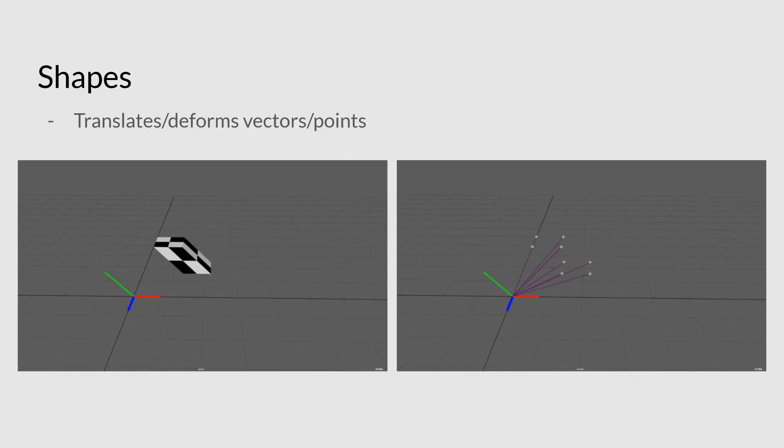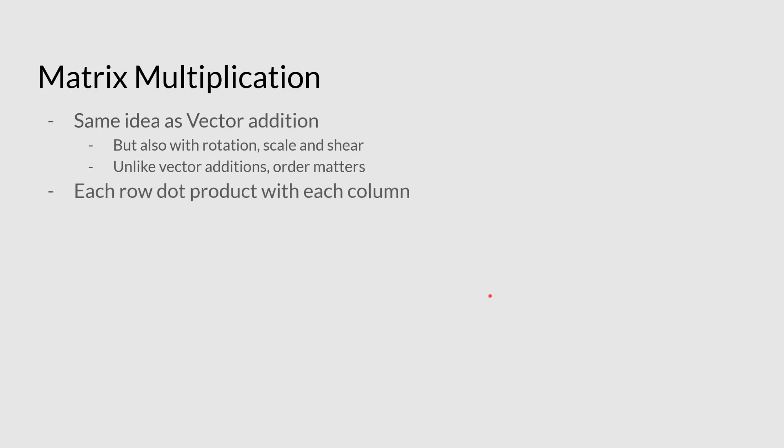So to do all of the main workhorse of the matrix math is matrix multiplication. It's sort of the same idea as vector addition, but you will also get rotation, scale, and shear because those are components of or functions in the matrix. So unlike with vector addition, you have to be certain of the order. The order will drastically change how your final result will look like. To actually do matrix multiplication, you have to take each row and dot product them with each column. You can use the multi-matrix node in Maya for this as well, so you don't have to do it manually.